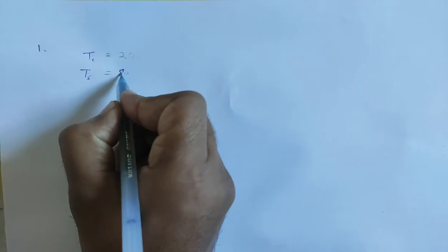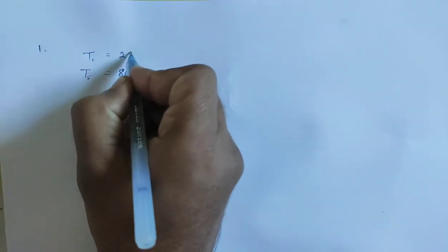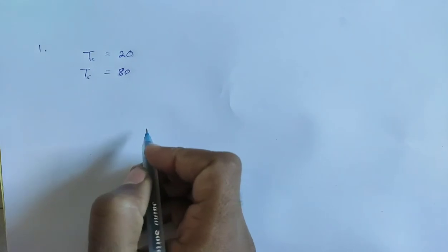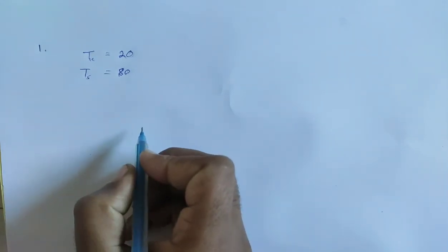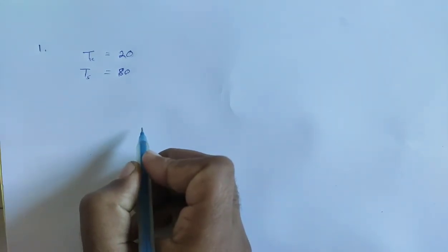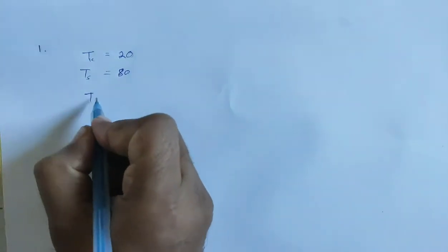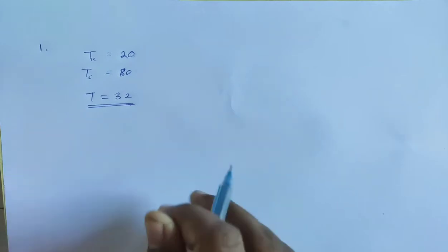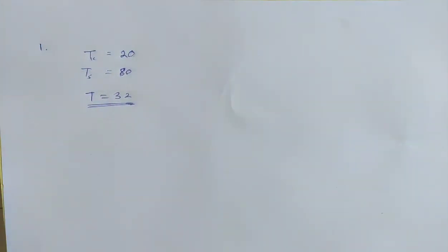Hcvama Solution, Chapter 23: Heat and Temperature, Question No. 1. The steam point and the ice point of a mercury thermometer are marked as 80 and 20. Steam is at 80 degrees and ice is at 20 degrees. What will be the temperature in centigrade scale when this thermometer reads 32?